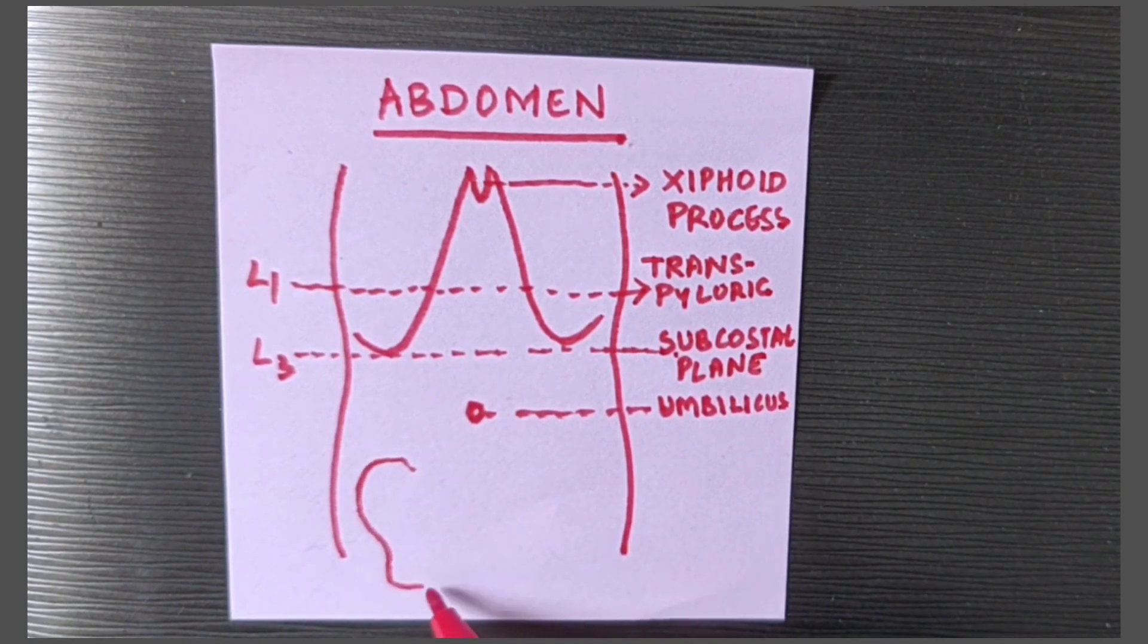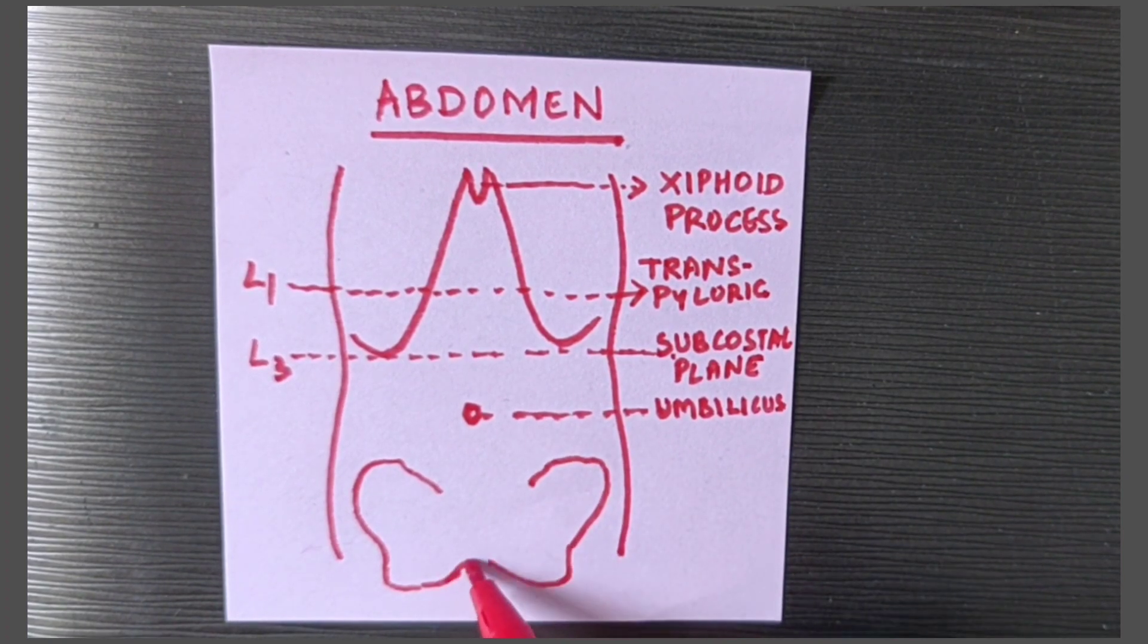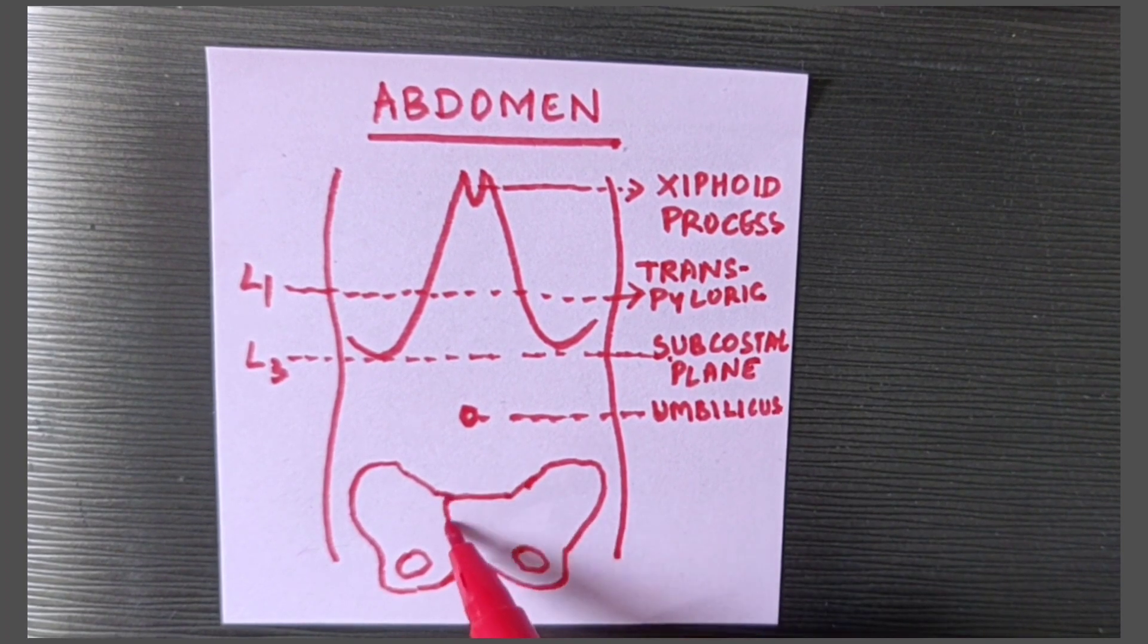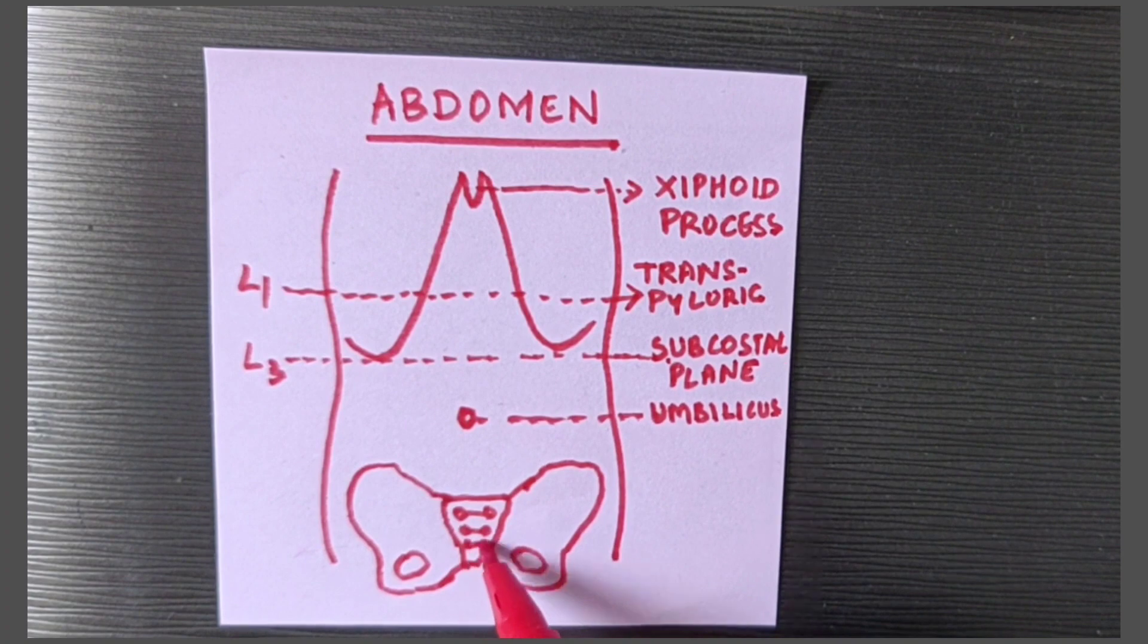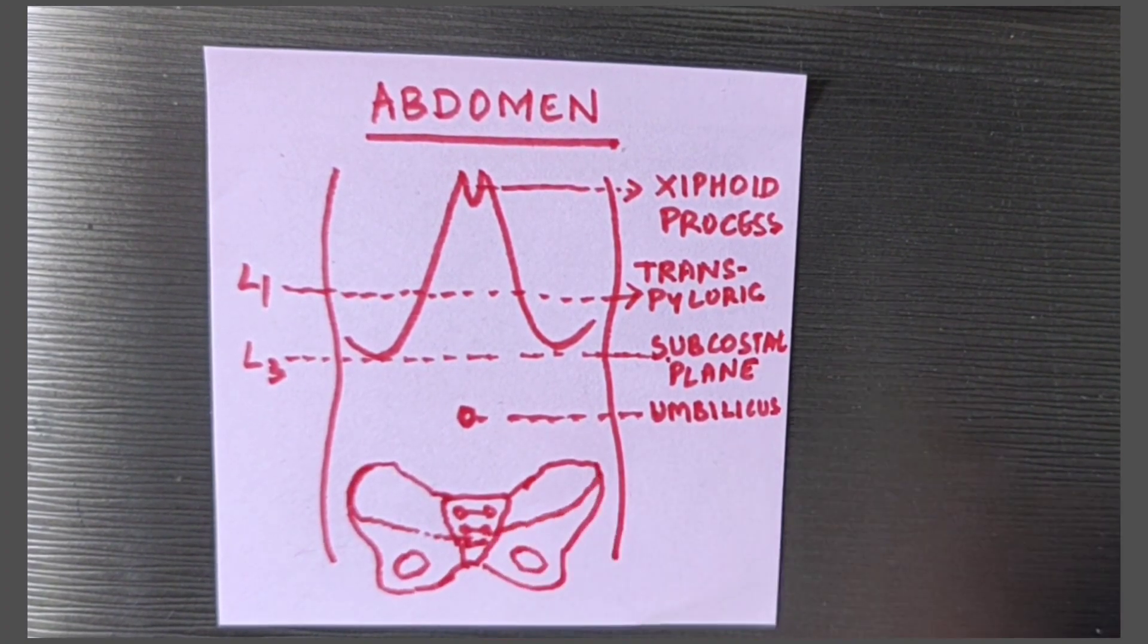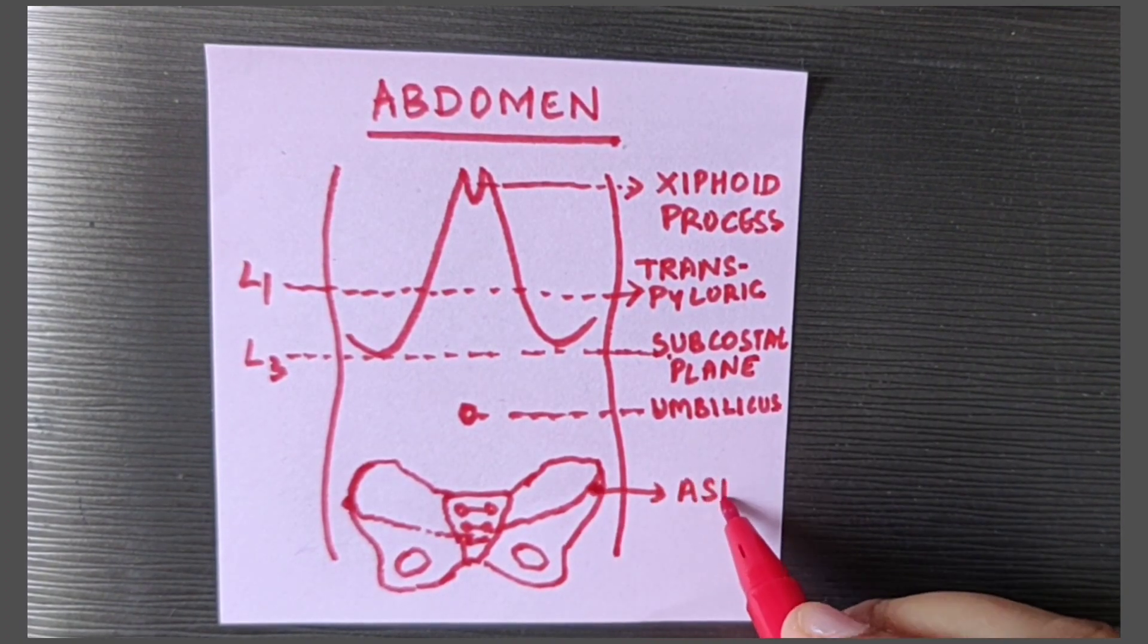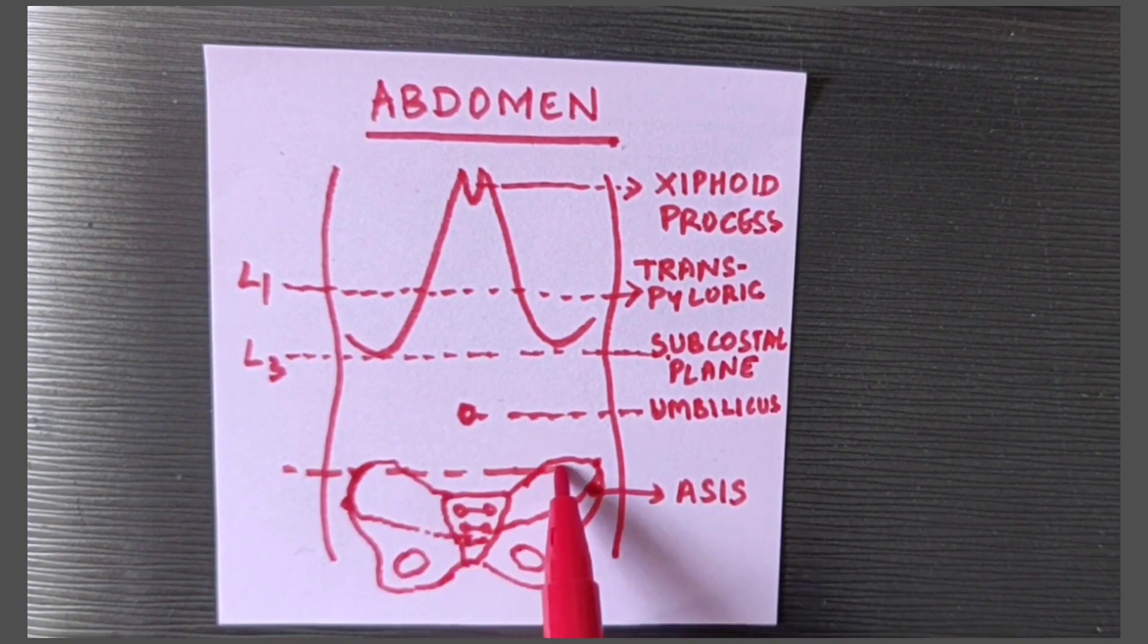Now I'm drawing the ileum and ischium which are parts of the pelvic bone, and here we have the sacrum. Here we have the anterior superior iliac spine and the tubercle of the iliac crest.